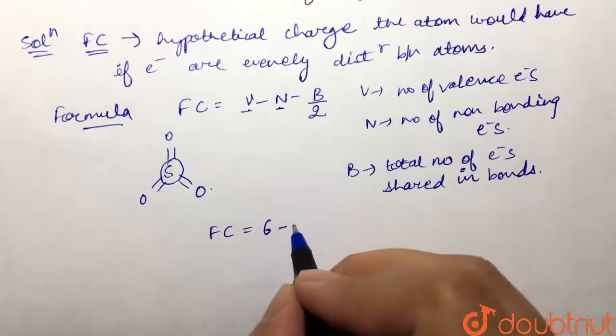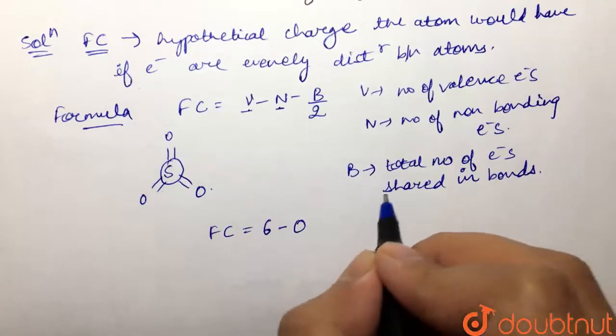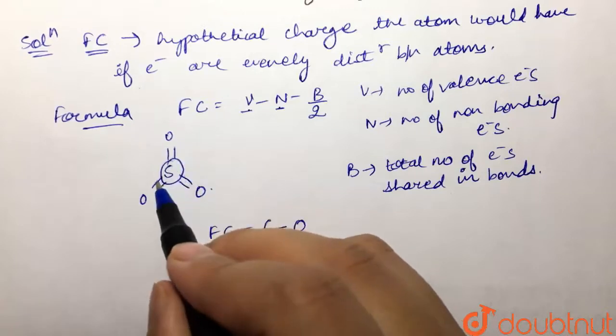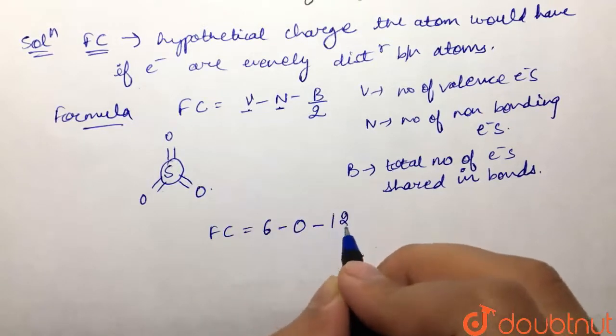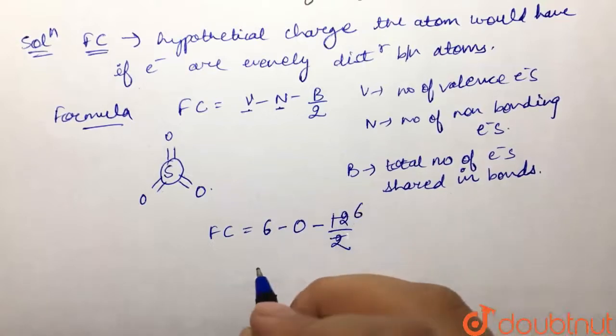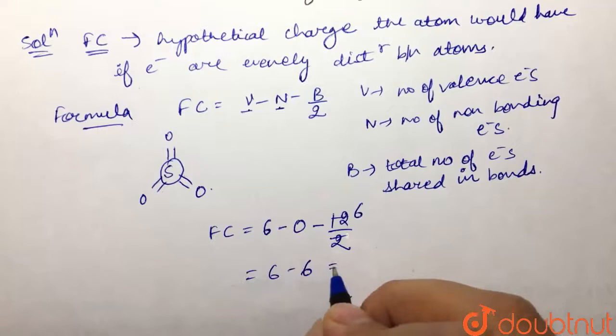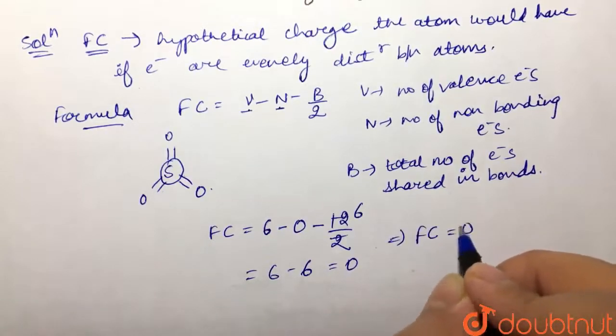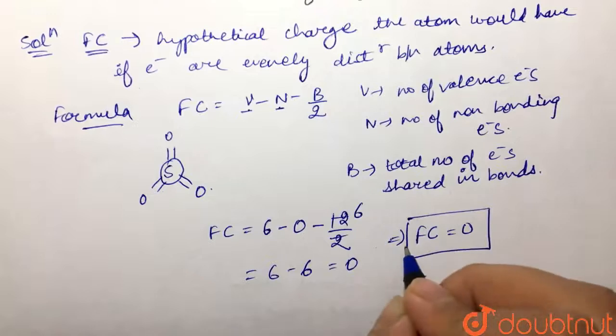bonds: 1, 2, 3, 4, 5, 6, 7, 8, 9, 10, 11, 12. So minus 12 divided by 2. This gives us 6. So we have 6 - 0 - 6, which equals 0. Therefore, the formal charge on sulfur is 0. Our answer is 0.